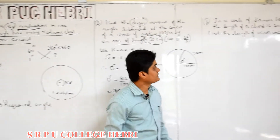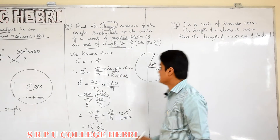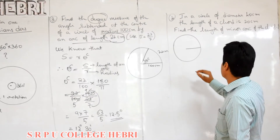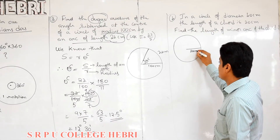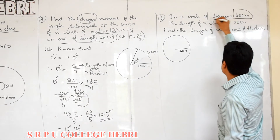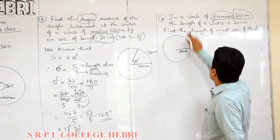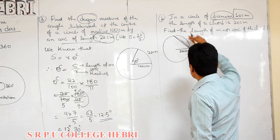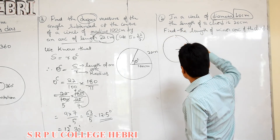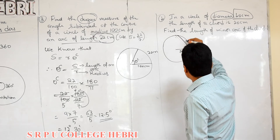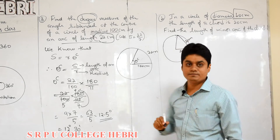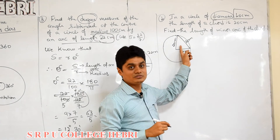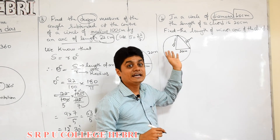Last question in this video: in a circle of diameter 40 centimeter, draw a simple diagram. Diameter is 40 centimeter, so radius is 20 centimeter. Length of the chord is also 20 centimeter — a chord joins any two points of the circle. So the chord length is 20 centimeter. Joining these two points, both the radii and the chord are all 20 centimeter. So what about this triangle? All sides are equal to 20 centimeter, so it is an equilateral triangle.